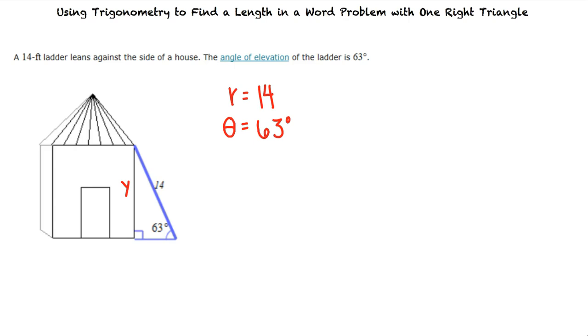Well, since we are given the length of the hypotenuse and the measure of an angle, and we want to find the length of the opposite side of the given angle, we should set up a sine equation, right? That's right.